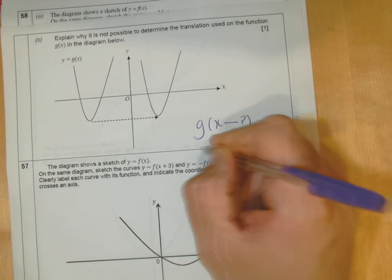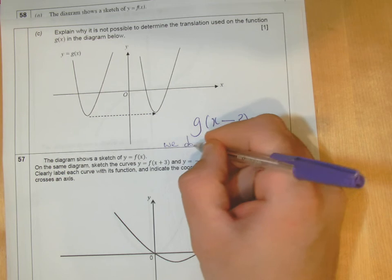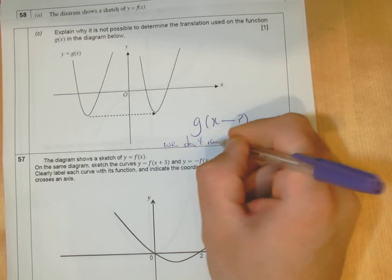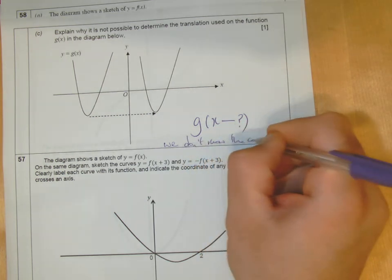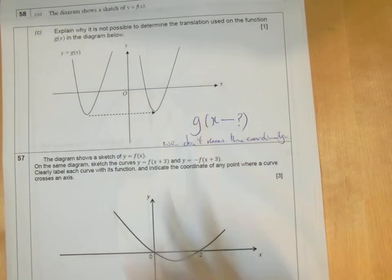We don't know, because we don't know the coordinates. That's why it's not possible. Just simply say we don't know the coordinates of the graph. Don't know the max, the min points, or where it crosses the x axis.